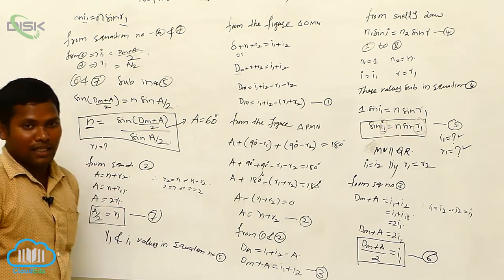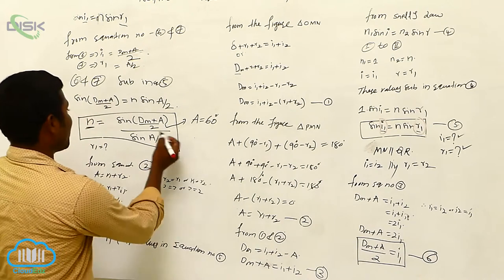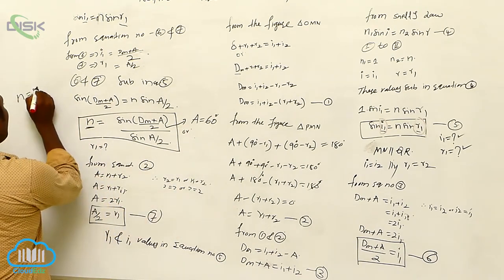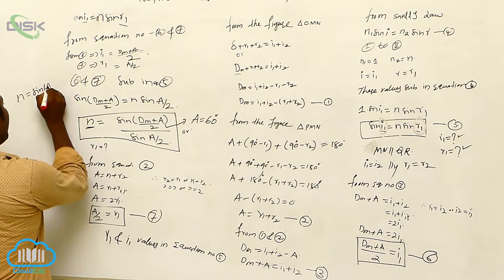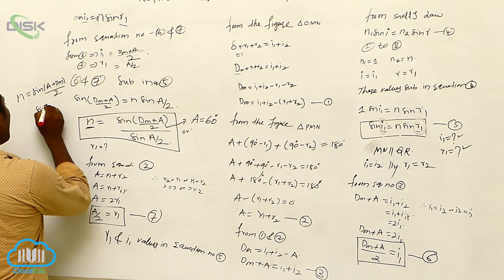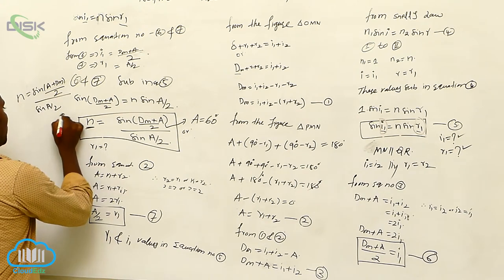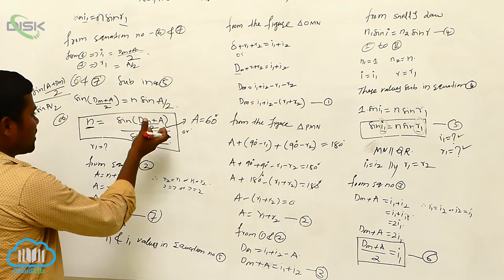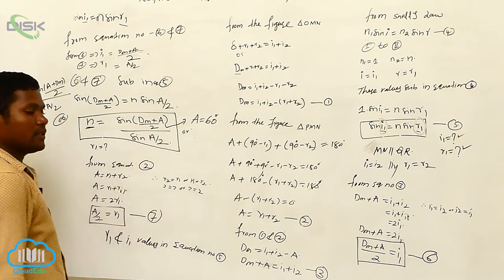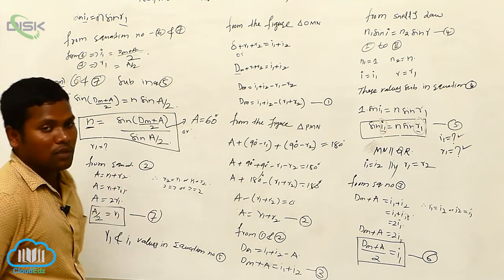This is the final expression: n is equal to sine of (a plus dm) divided by two, divided by sine of a by two. Both forms are correct — dm plus a divided by two, or sine a by two. This is the refractive index of the prism.